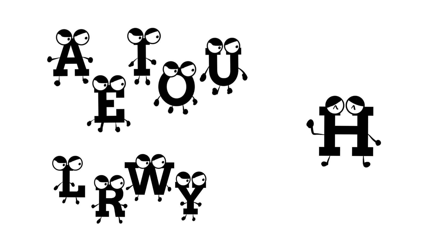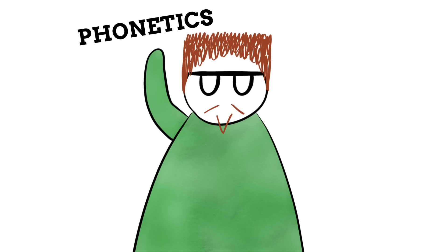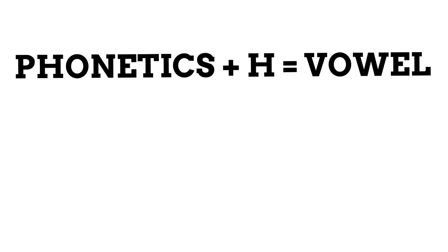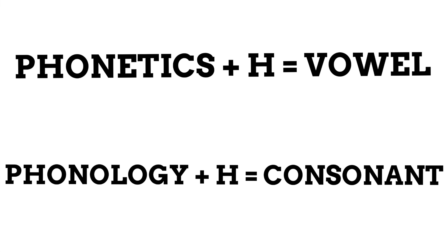So why isn't H a vowel? Well, it comes back to those aforementioned language patterns that phonology deals with. We don't really use H in the same way we use other vowels — it isn't used to smooth out two consonant sounds or to bridge a gap between them. This is why it isn't considered a vowel, despite the fact it's pronounced exactly like one. For the record, the study of sounds in language is called phonetics, and from a phonetical perspective, H is indeed a vowel. This puts H in a really odd spot where phonetically it is a vowel, but phonologically it's a consonant.